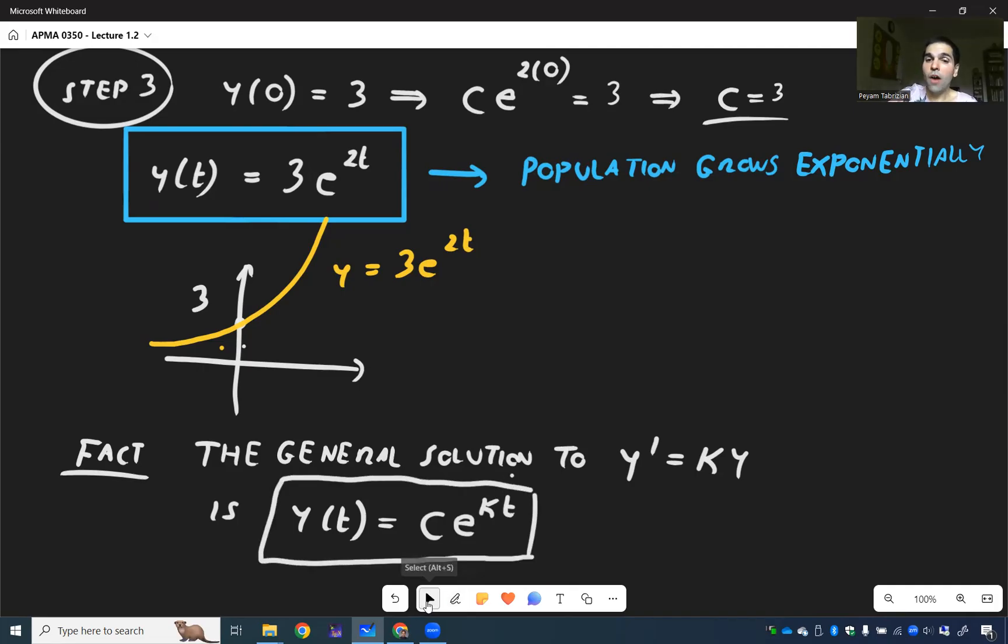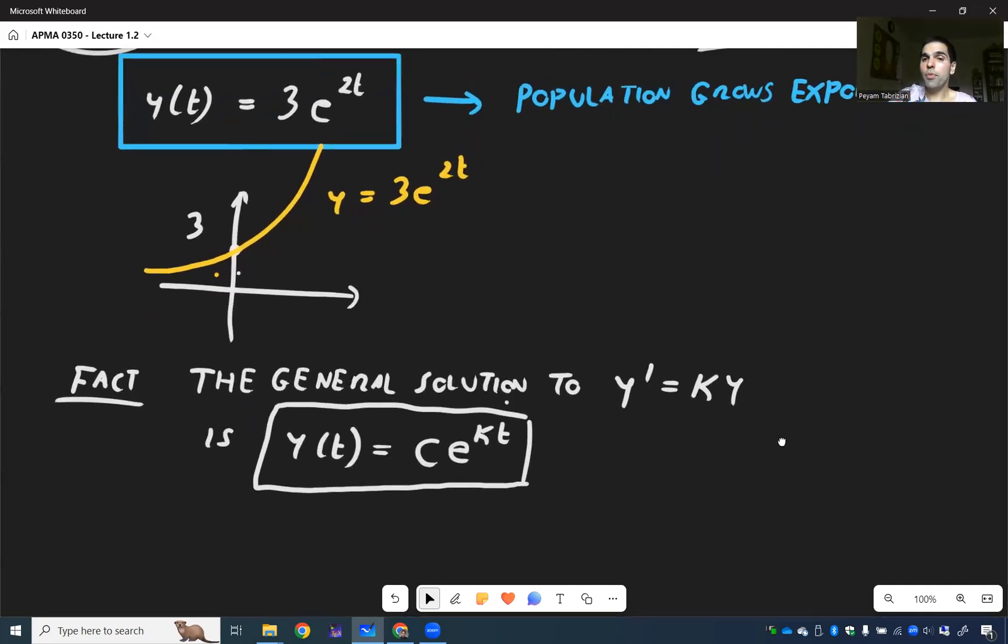So, please, from now on, when you see y prime equals k y, just go to c e to the k t. You do not need to repeat the derivation above. That was just for us to see how we can actually solve it.